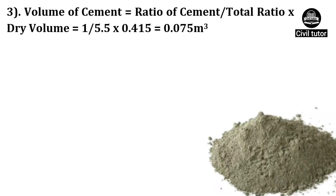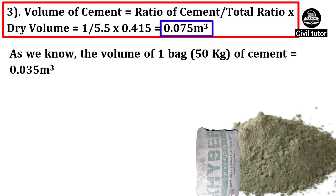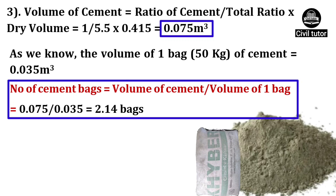Now, we need to calculate the volume of cement, which is given by the formula: ratio of cement divided by total ratio, multiplied by dry volume. The ratio of cement is 1, the total ratio is 5.5, and the dry volume is 0.415 meter cube. On substituting these values, the volume of cement will be equal to 0.075 meter cube. Since the volume of 1 bag of cement is equal to 0.035 meter cube, the number of cement bags required will be equal to 0.075 divided by 0.035, which gives 2.14 bags.